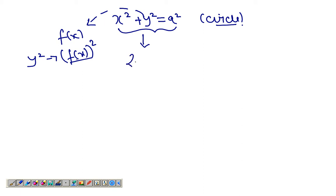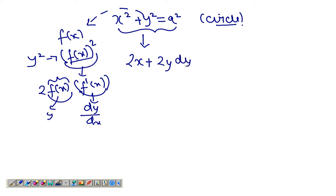Let's start differentiating both sides. The derivative of x² is simply 2x plus the derivative of f(x)², which is 2f(x). Using the chain rule, we differentiate the inside, which is f'(x), and f'(x) is dy/dx. f(x) is y, so this is 2y dy/dx. a² goes to 0, so we have dy/dx equal to negative x over y. That's implicit differentiation.